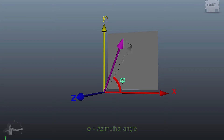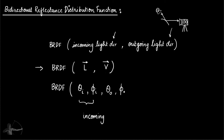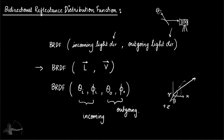There are formulas that can transform spherical coordinates to Cartesian coordinates, or vice versa. The BRDF is represented as theta_i, phi_i — the incoming light direction — and theta_o, phi_o — the outgoing direction. Rho, which we don't need here, is the magnitude of the vector. Theta is the angle from the positive z-axis, and phi is the angle between the positive x-axis and the projection of the vector on the x-y plane. That is how we represent BRDF.